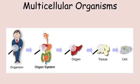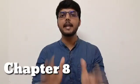So our life starts from a single cell. That single cell multiplies and forms a tissue. The tissue multiplies, arranges in proper shape and size, and forms an organ. When organs work in a proper sequence they form an organ system, and when this organ system is fixed in a particular body, it becomes an organism. This was chapter number 8: Cell.